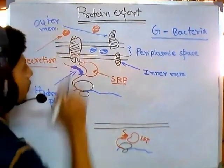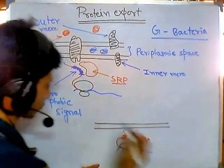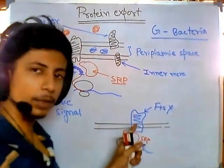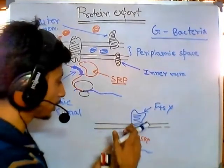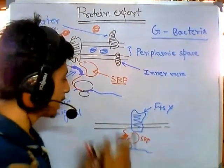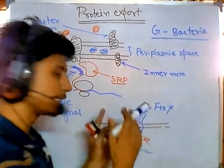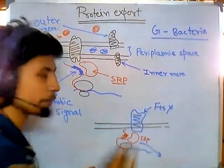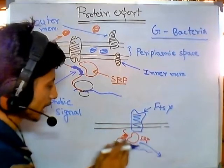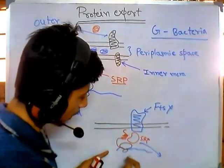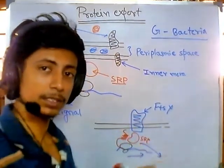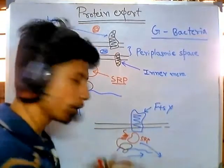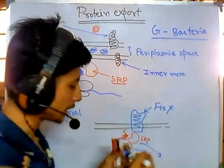SRP then brings this growing polypeptide to another protein already present in the cell membrane, termed FTSY. FTSY is a very important protein — it recognizes whether the protein being made is going to be inserted into the membrane or not. If it confirms the protein is to be embedded, the SRP falls off after delivering the peptide to FTSY. FTSY holds the peptide while the ribosome continues adding amino acids.